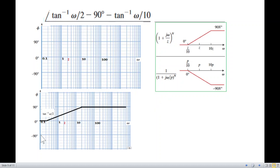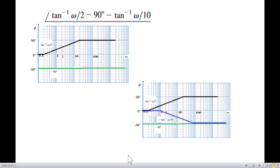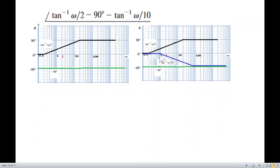It's minus 90 degrees from minus tan inverse omega over 10. At the corner frequency 10 divided by 10 equals 1, and 1 multiplied by 10 equals 10. From 1 to 10 we go down to minus 90 degrees.